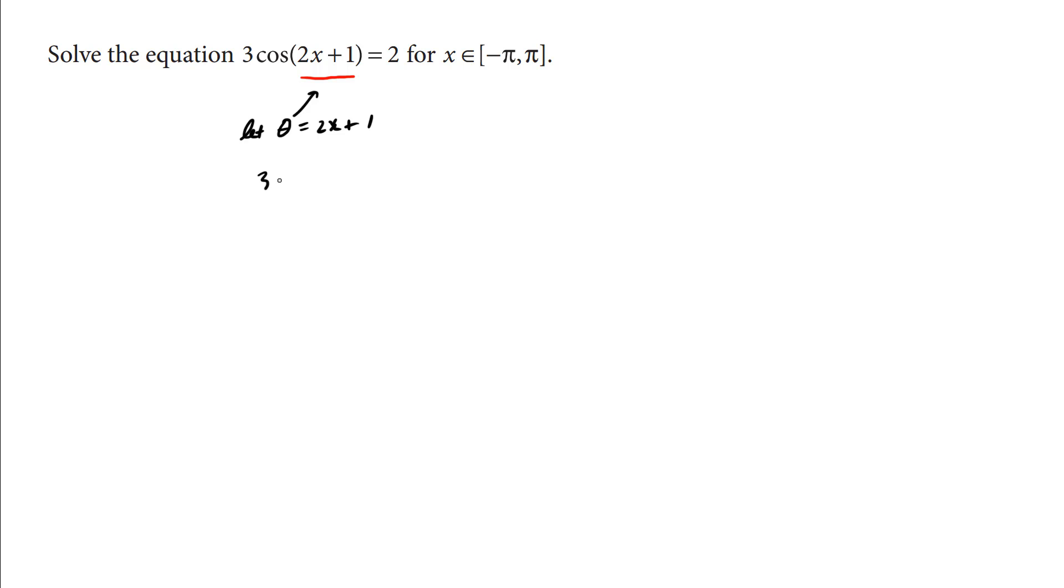We have 3 cosine of theta equals 2. We're going to divide both sides by 3. We have cos theta equals 2 thirds. And this looks very familiar.